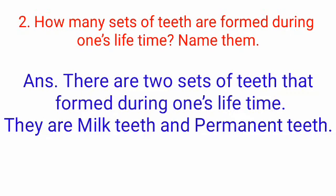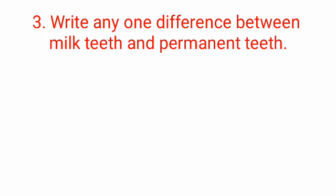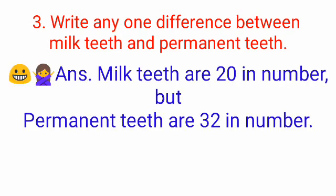Question three: write any one difference between milk teeth and permanent teeth. Milk teeth number 20 while permanent teeth number 32. Also, milk teeth are temporary — they fall out on their own with age — whereas permanent teeth stay with us for life and won't fall out unless damaged.